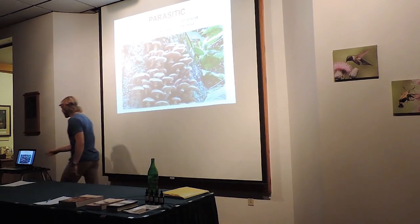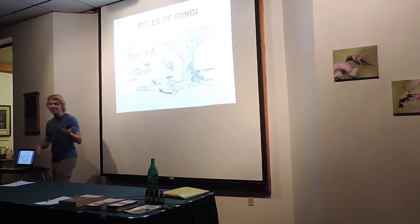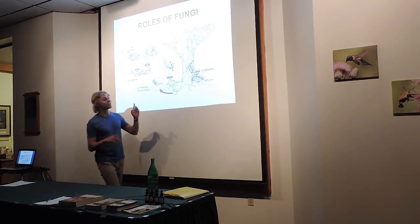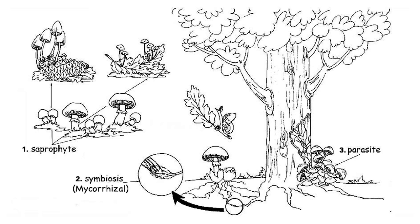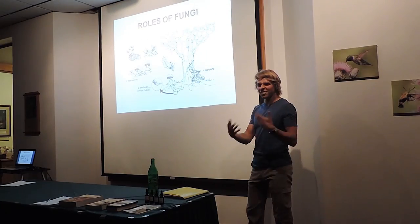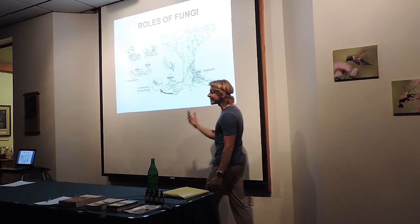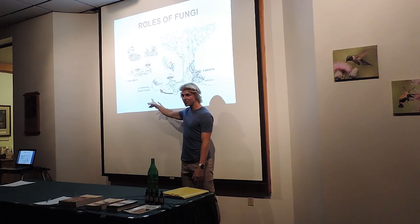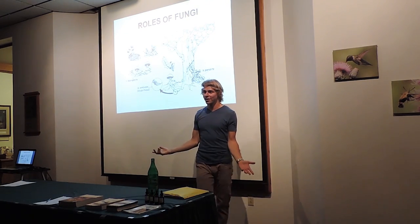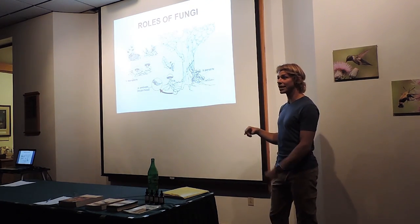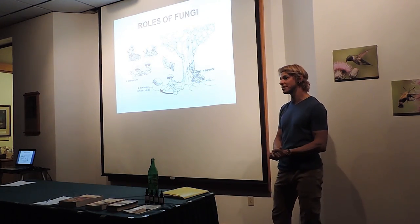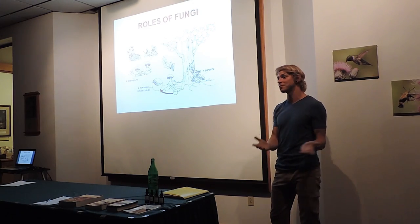Just because they're parasitic doesn't mean they're not also good guys. Research shows that even parasitic mushrooms, once they weaken the tree and bring it down, can act as saprophytes as well — breaking it down even farther, finishing their dirty business. But they can also act as mycorrhizal species. Even the honey mushroom has been shown to hook up with various orchid species and help get them started.